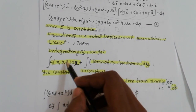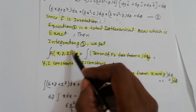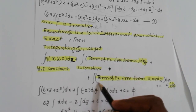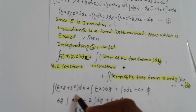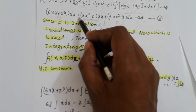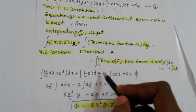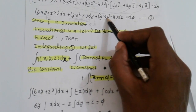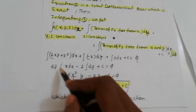Integrating: take the integral of f1 (treating y, z as constant) dx, plus the term of f2 free from x (treating x, z as constant) dy, plus the term of f3 free from x and y dz, plus constant c equals phi. For f1: integrate (6xy + z³)dx. For f2 free from x: only minus z remains, so minus z dy. For f3 free from x and y: no remaining term, so 0 dz.